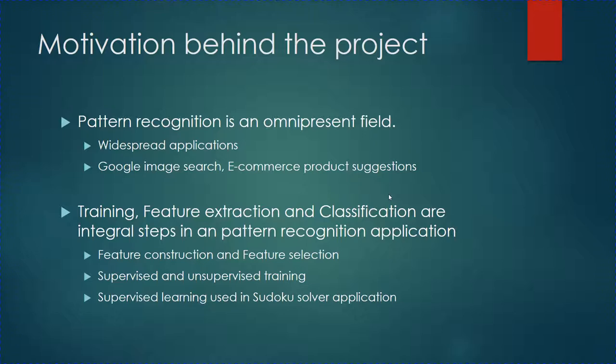Patterns can be recognized from real-world data usually by either training a system with similar data and teaching it the difference between different classes, or by predictive clustering. These two methods are called supervised and unsupervised learning respectively. In my project, I've used supervised learning algorithms to train and classify digits from a Sudoku image and solve the puzzle.